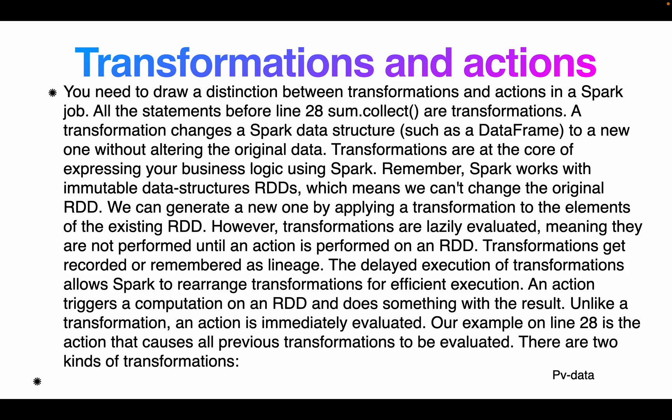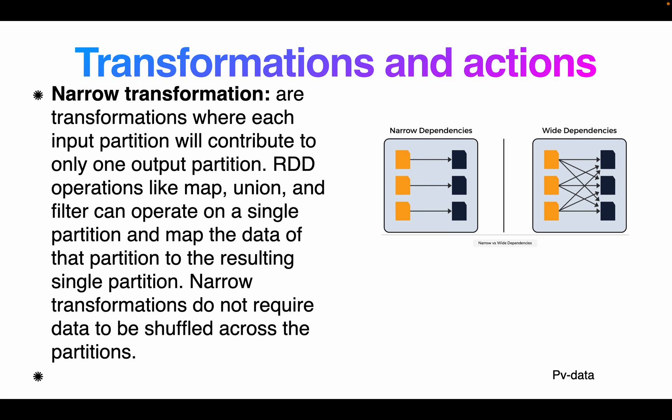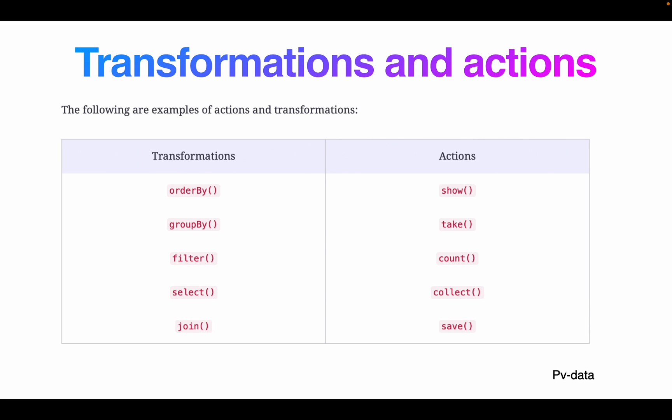Transformations are recorded, and the delayed execution allows Spark to rearrange them for efficient execution. An action triggers computation on the RDD and does something with the result. In our previous example, collect is an action. Examples of transformations include orderBy, groupBy, filter, and select. Examples of actions include sort, take, count, collect, and save.